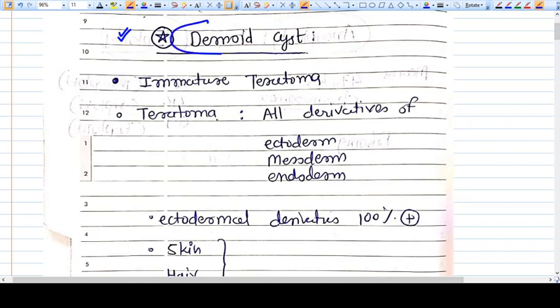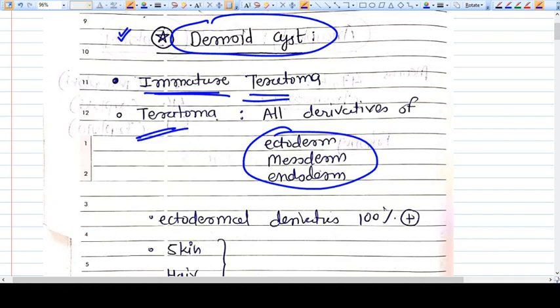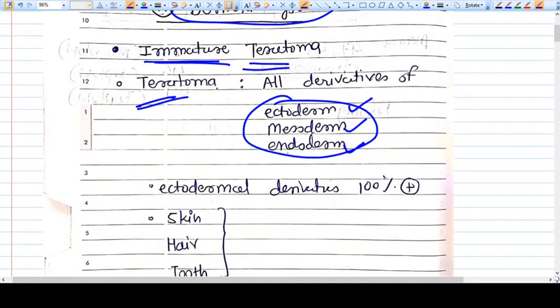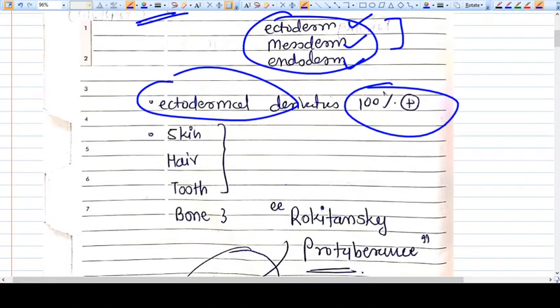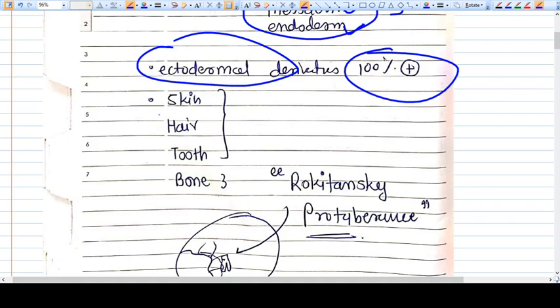Let's start with dermoid cyst, which is a mature teratoma. Mature teratoma means all three derivatives from ectoderm, mesoderm, and endoderm are seen. Immature teratoma means there are derivatives from some of these layers. Ectoderm is very common and seen in 100% of cases of immature teratoma.